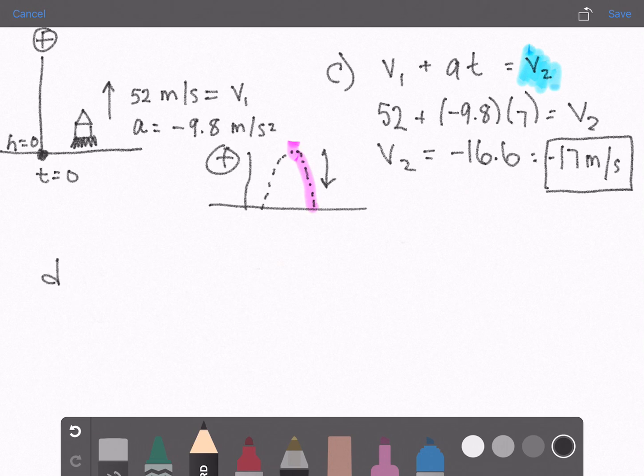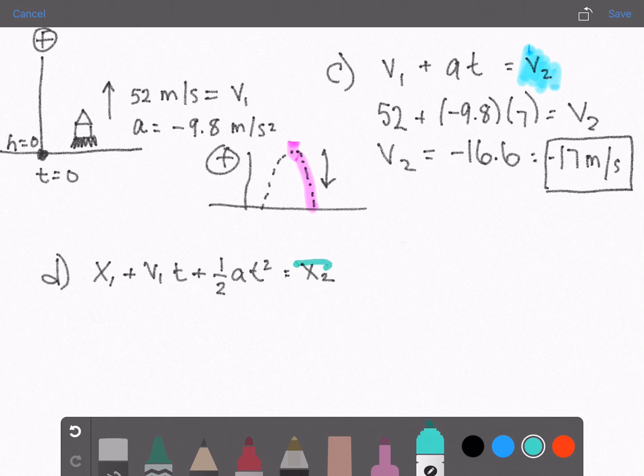And part D: Find the altitude at 7 seconds. This is just like part B but with 7 instead of 1. We'll use the same equation as in part B: x1 plus v1 times t plus 1 half at squared equals x2. We're solving for x2.